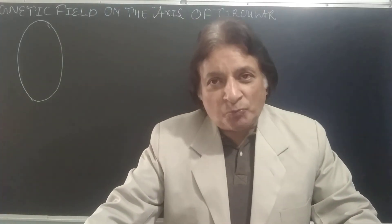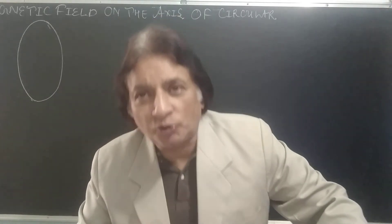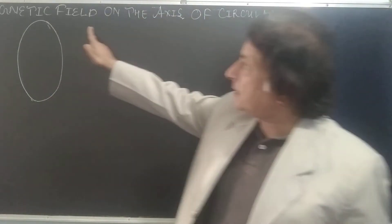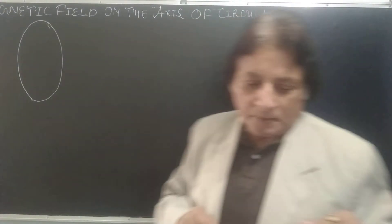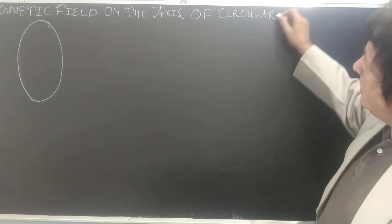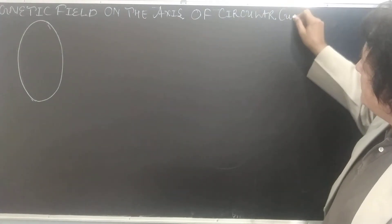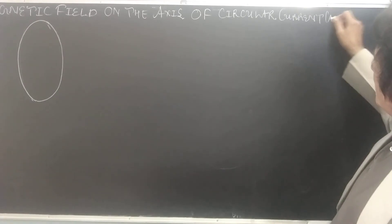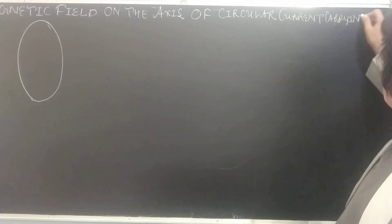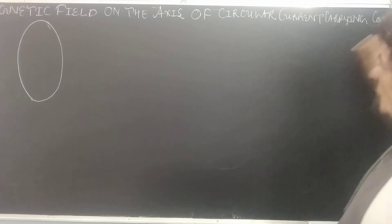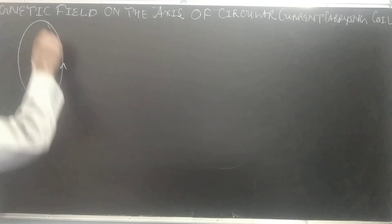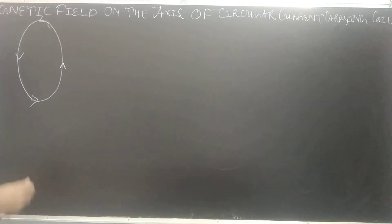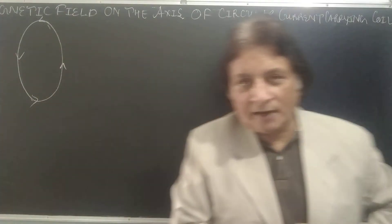Today I will explain a very important topic: magnetic field on the axis of a circular current-carrying coil. This is a circular current-carrying coil that you can see in front of you. We have a circular current carrying coil.